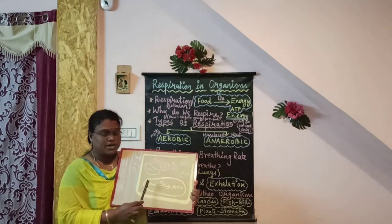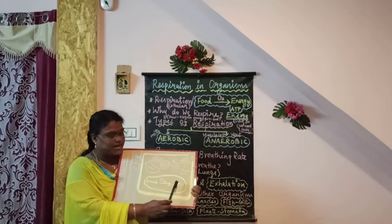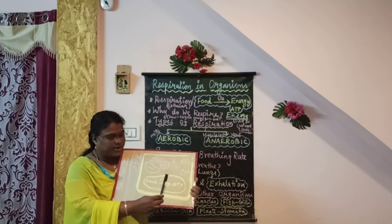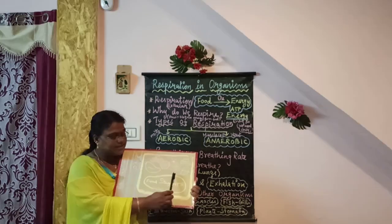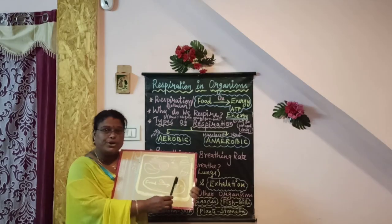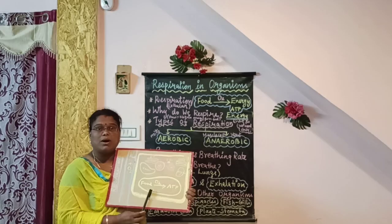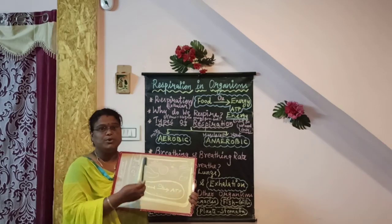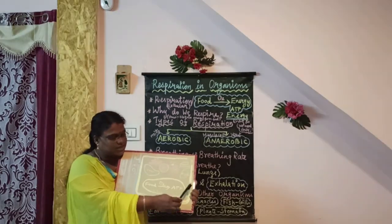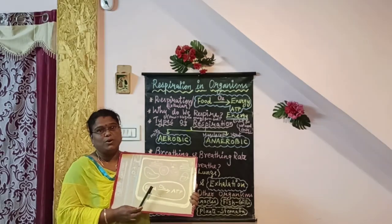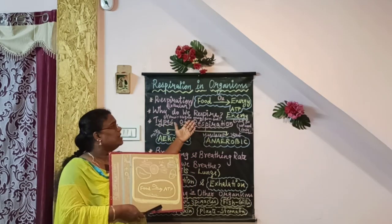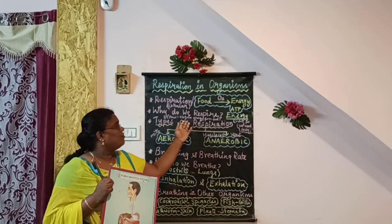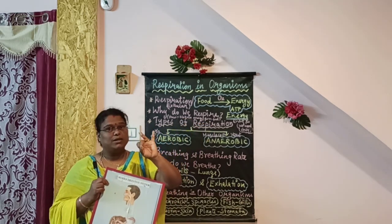In the cell, digested food is converted into ATP — adenosine triphosphate — which is the energy currency of the cell. Food is converted into energy in the presence of oxygen inside the mitochondria. Since mitochondria distribute energy to various cell organelles, it is called the powerhouse of the cell. This is how we obtain energy from food, through the two important processes of digestion and respiration.